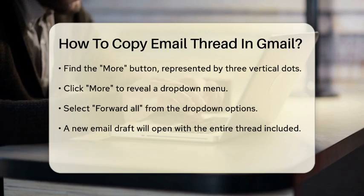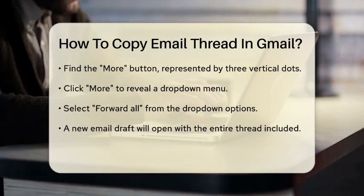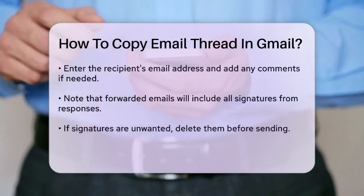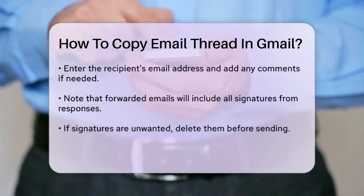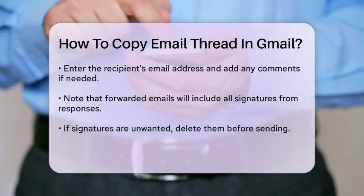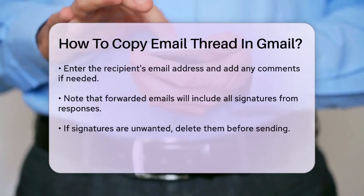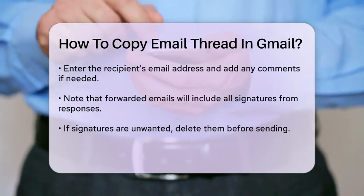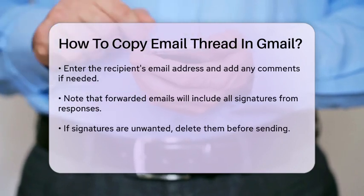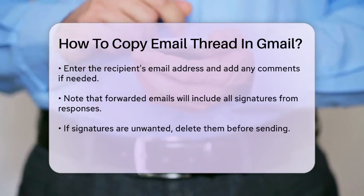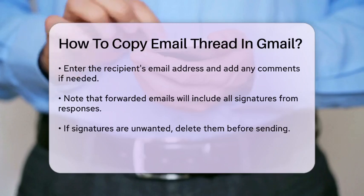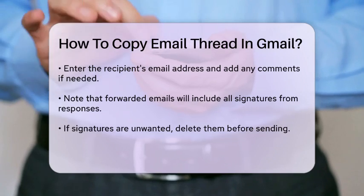You can now enter the recipient's email address and add any additional comments or body text you need. Here's a key point: when you forward the entire thread, Gmail will include all the emails in the conversation, along with any signatures that were included in each response. If you don't want these signatures, you can take the time to delete them before sending.